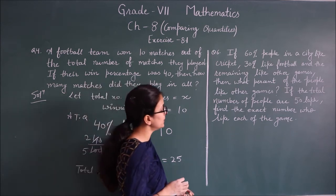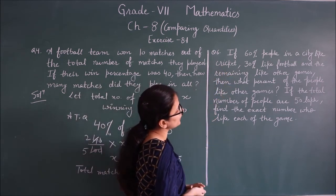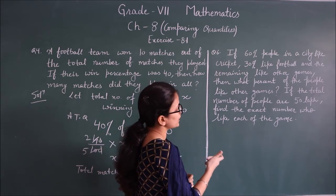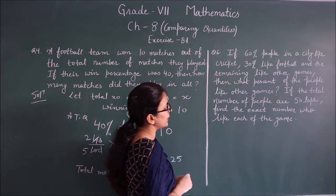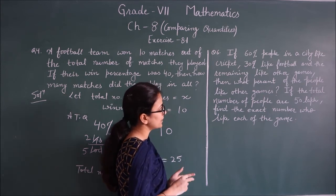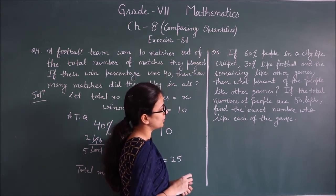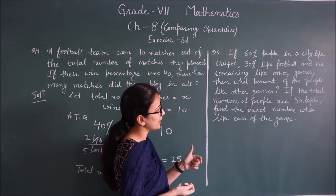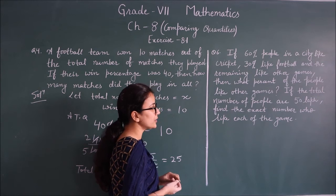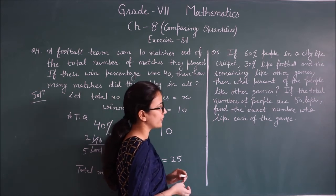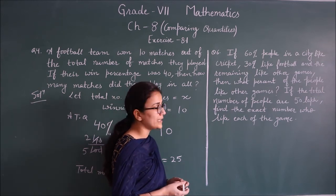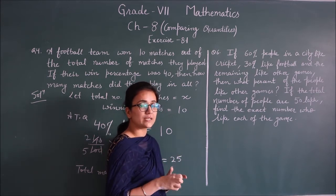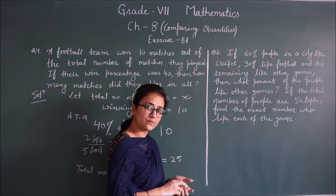Question 6: If 60% people in a city like cricket, 30% like football, and the remaining like other games, then what percent of the people like other games? If the total number of people are 50 lakh, find the exact number who like each game.